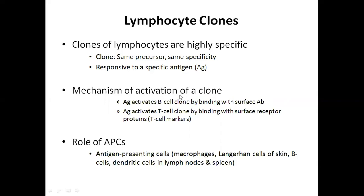The mechanism of activation of a clone: for the activation of B and T lymphocytes, we require antigen exposure. An antigen activates the B cell clone by binding with surface antibodies present on the surface of B cells, while the antigen activates the T cell clone by binding with surface receptors present on the surface of T lymphocytes. Antibodies are located on the surface of B cells, while T cell receptor proteins are present on the surface of T cells.